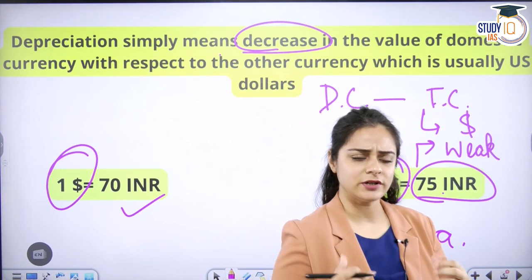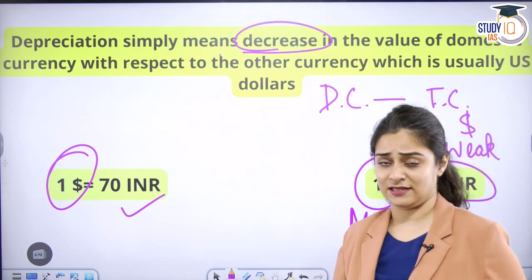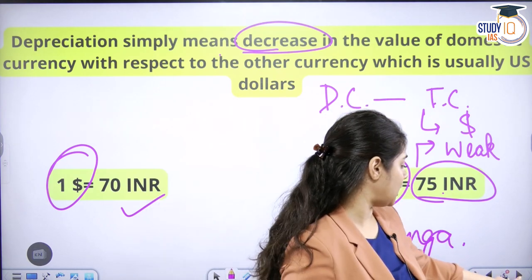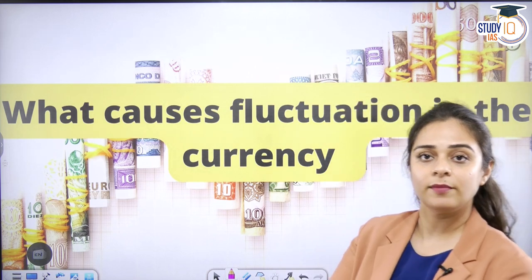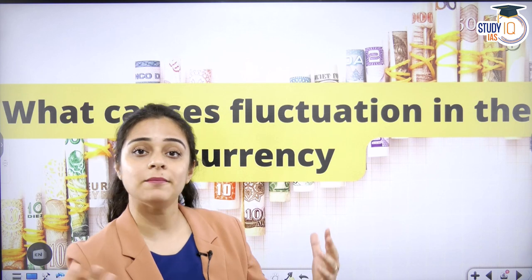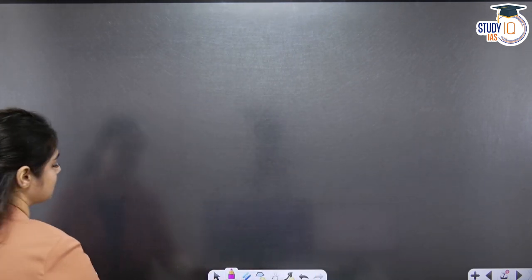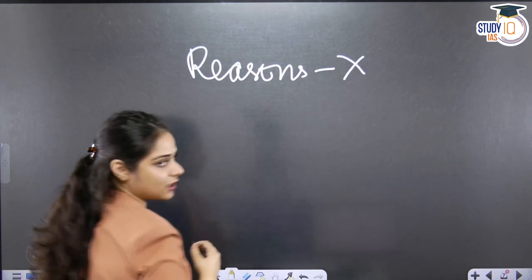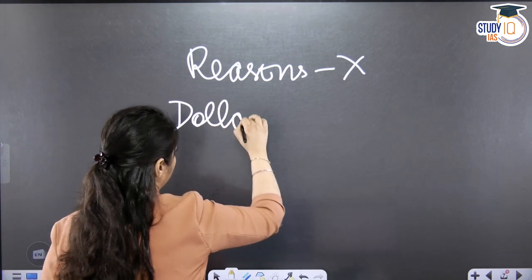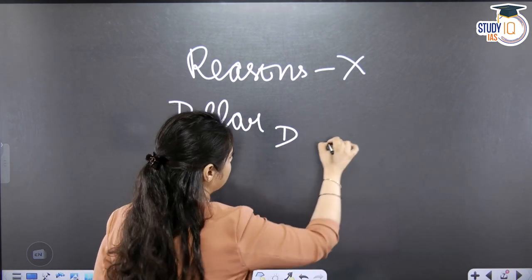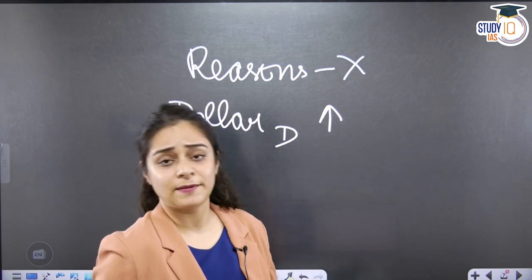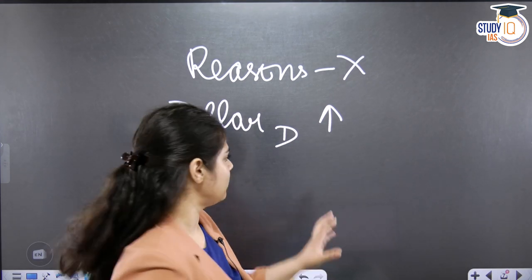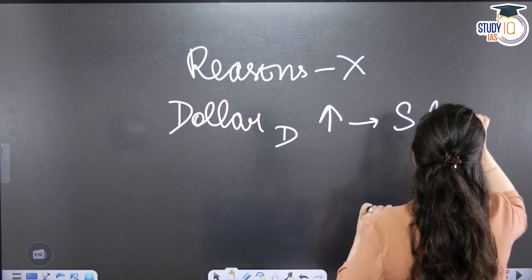Now, the next question that should come to your mind is: who decides this value? Is there some central authority, some international organization, or a government that decides that one dollar will cost 65 rupees this week and 70 rupees next week? No, students. It is all dependent upon the free forces of demand and supply. The demand of any currency — whether INR, dollar, or euro — if it increases, its value will increase. Dollar ki supply is limited, supply of any currency in the world is limited.